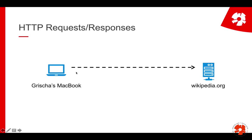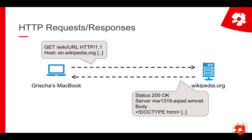When I request a website, for example Wikipedia, I send a request that looks something like: GET /wiki/URL HTTP/1.1, host wikipedia.org, and I get something back. This is an HTTP request and this is an HTTP response, and we'll look into the details of what those different things mean.